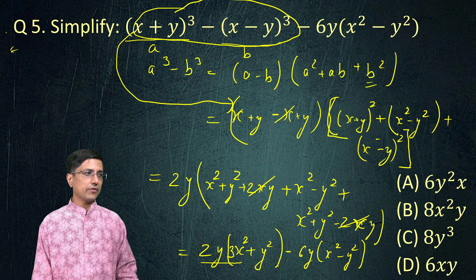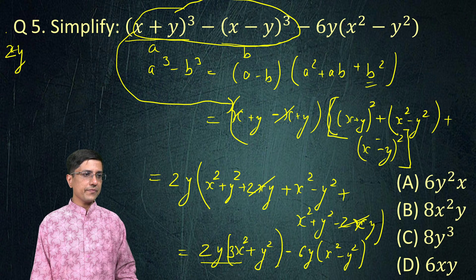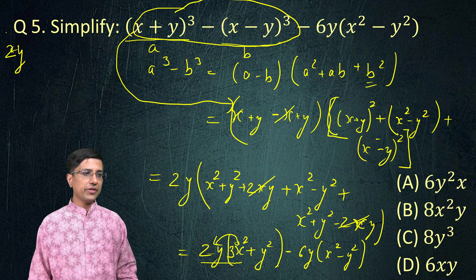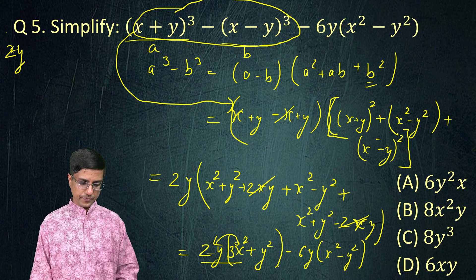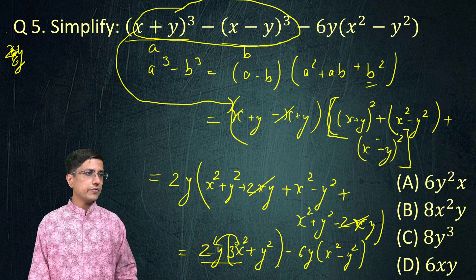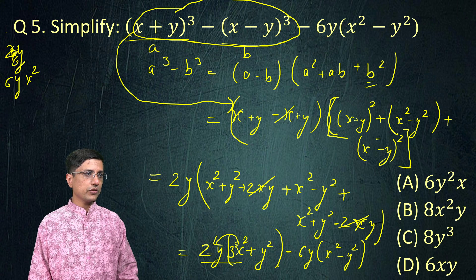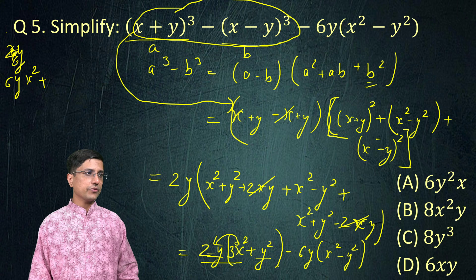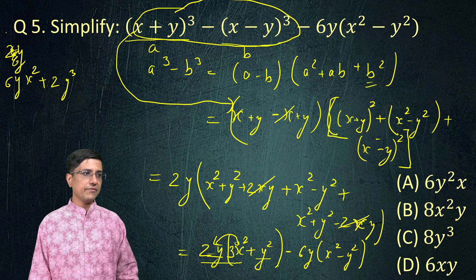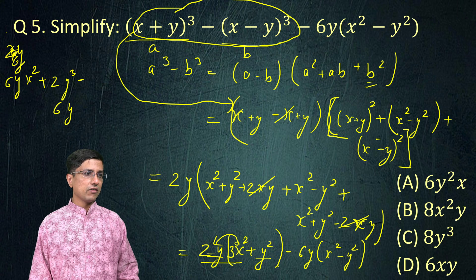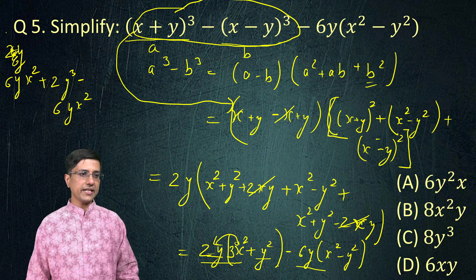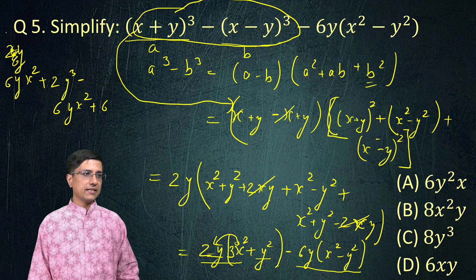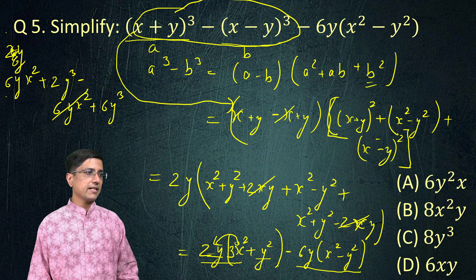Now, I can write 2y. So, this is 2y into 3x². This becomes 6yx². So, this becomes 6yx² + this is 2y³. So, this becomes 2y into y², this becomes 2y³. And then from there I get -6yx². So, this is from the second term. From this one I am getting +6y³. So, this and this again cancel. So, your final answer becomes 6 + 2 = 8y³.